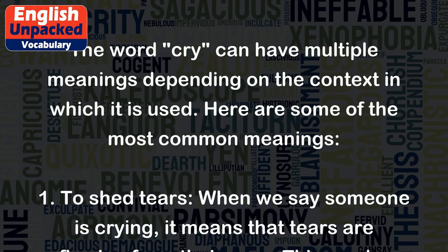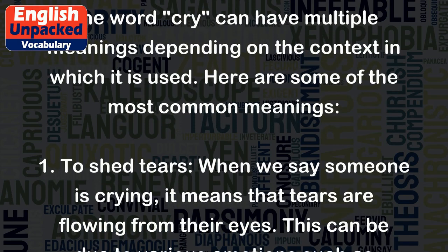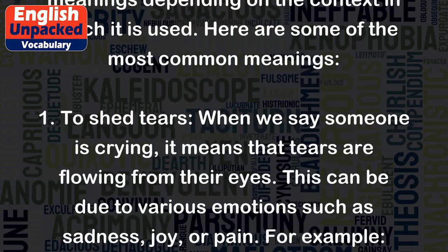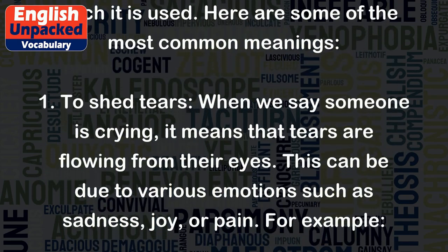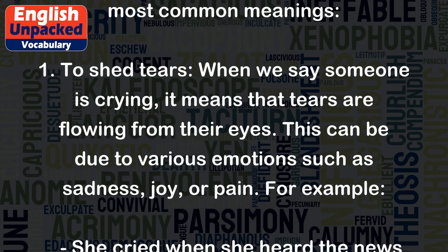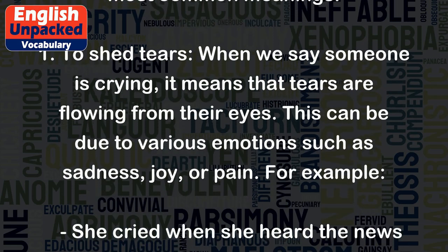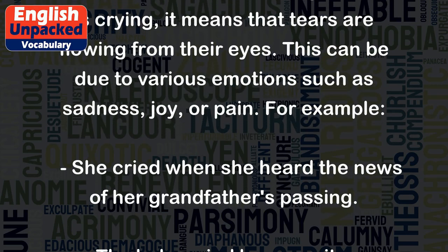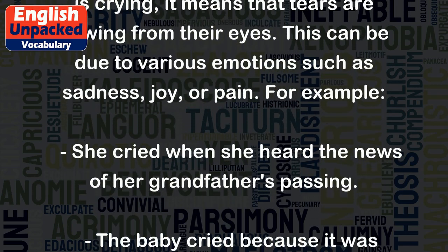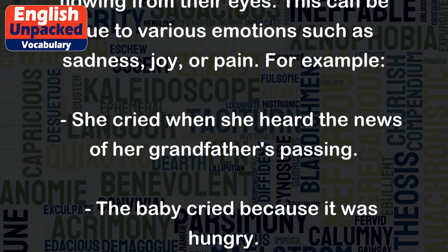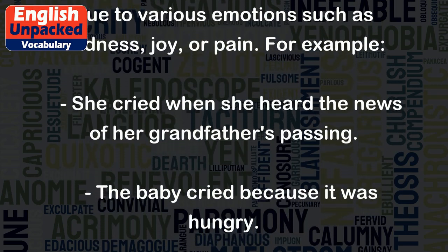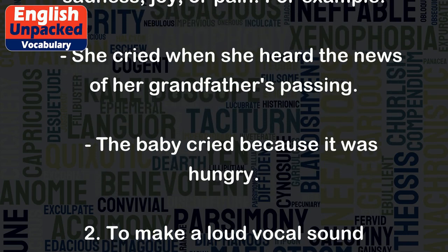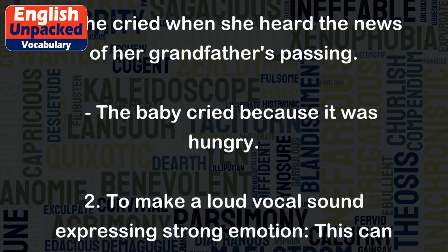1. To shed tears. When we say someone is crying, it means that tears are flowing from their eyes. This can be due to various emotions such as sadness, joy, or pain. For example, she cried when she heard the news of her grandfather's passing. The baby cried because it was hungry.